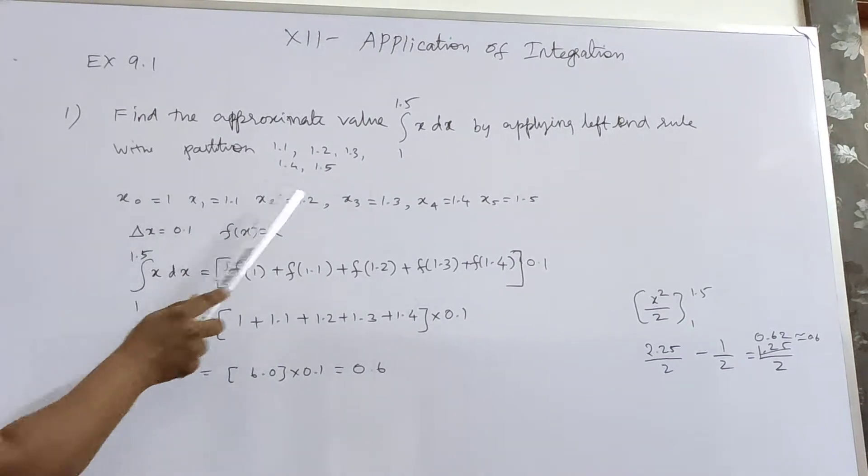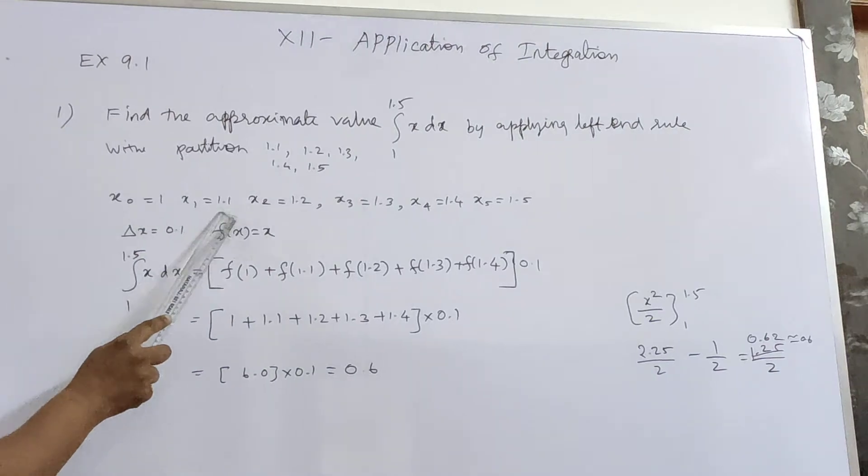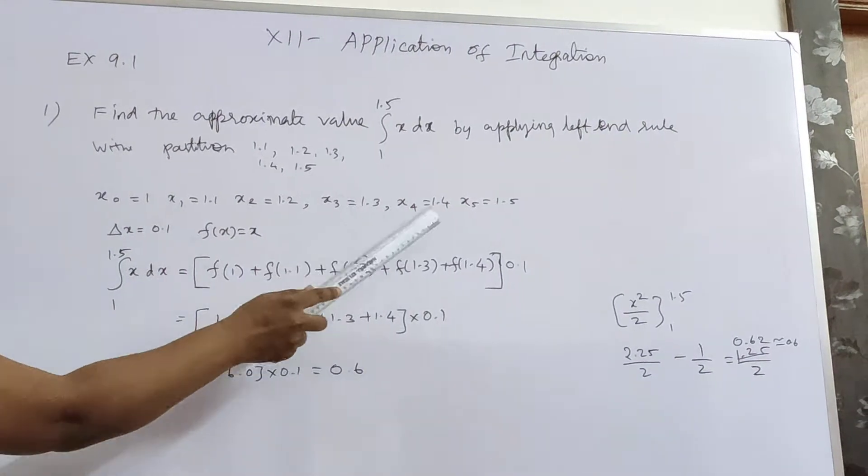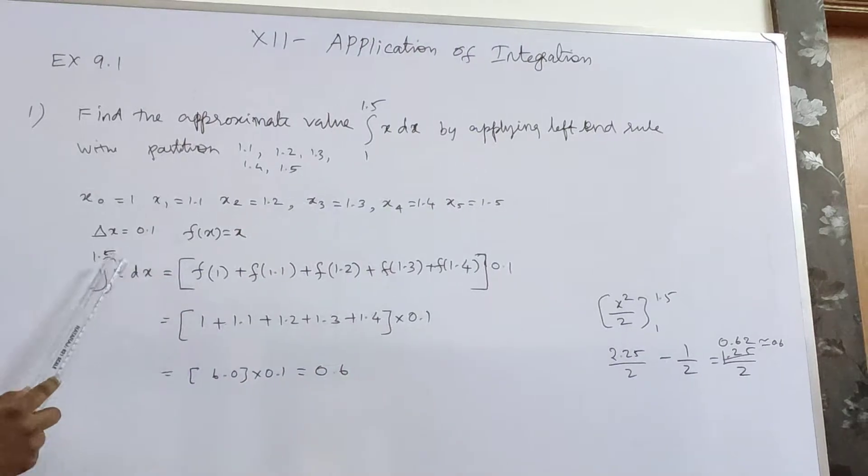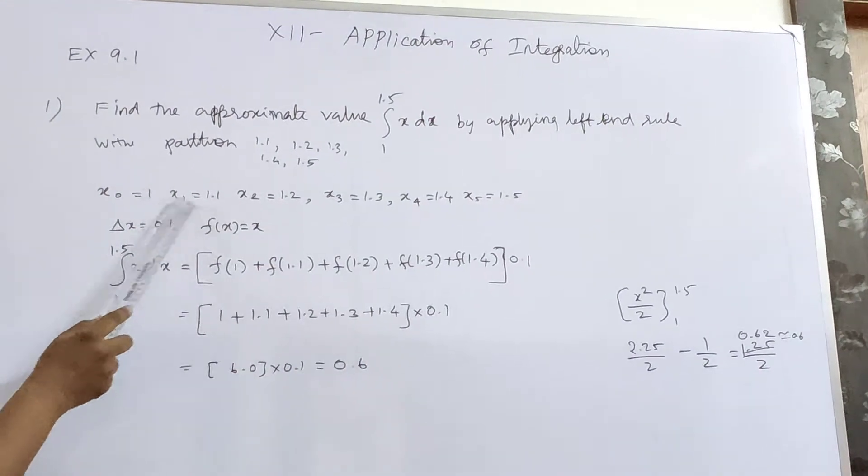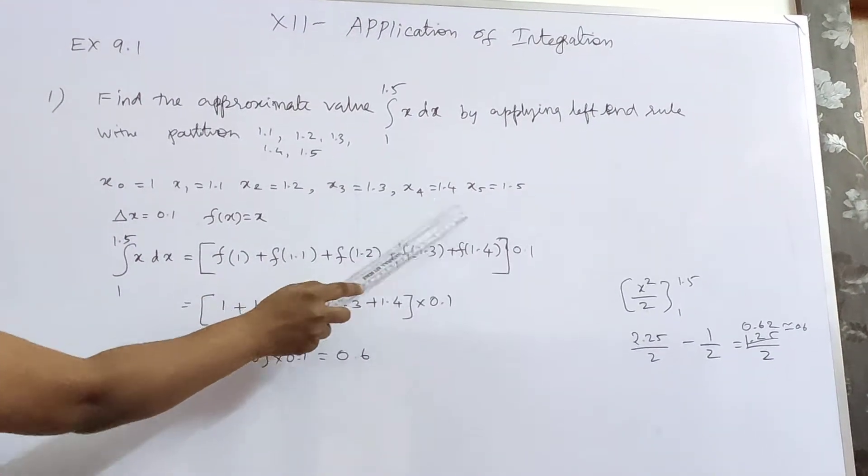So x0, the lower limit is 1, then we put 1.1, 1.2, 1.3, 1.4, 1.5 as the upper end. So delta x is the interval width of 0.1.